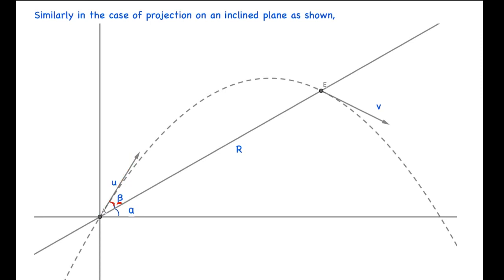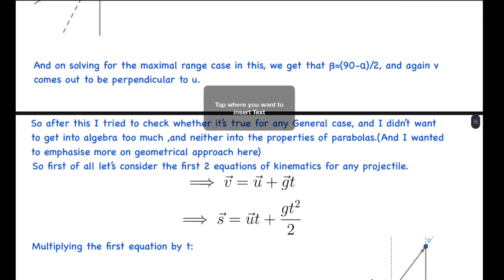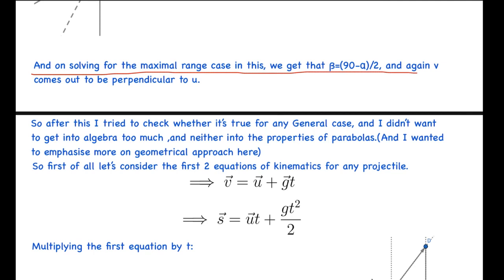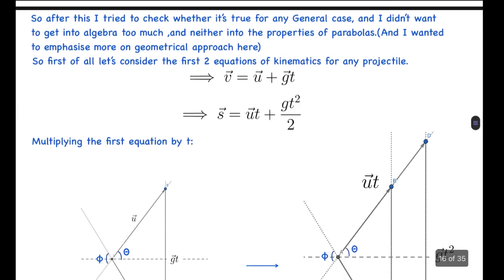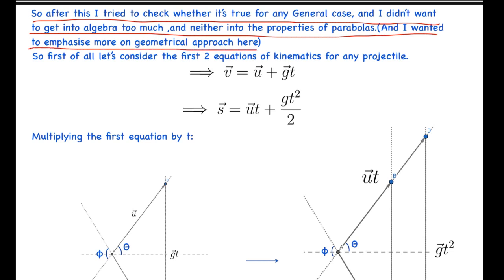On solving for the final velocity and finding that angle, it comes to be 90 minus beta, and it can be verified — with a bit of calculation — that the velocities are perpendicular here also. So for maximum range we get beta equals (90 minus alpha) over 2, and again v comes out perpendicular to u. After this I tried to check whether it's true for any general case, without getting into too much algebra or properties of parabola, and in this video I wish to emphasize the geometrical approach.